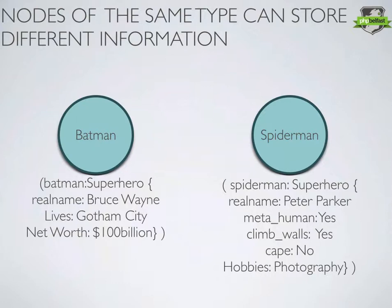Here we have two nodes, Batman and Spiderman, and we're storing relatively different information on them. This is one of the great strengths of graph databases. In a traditional database your column headers define what data that row can store. But with a graph database, you can add or leave out as many or as few labels as you want — it gives you a lot more flexibility.